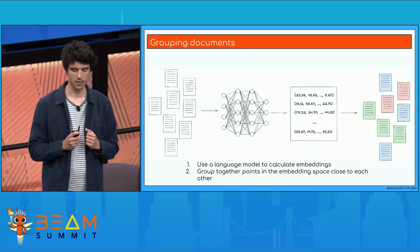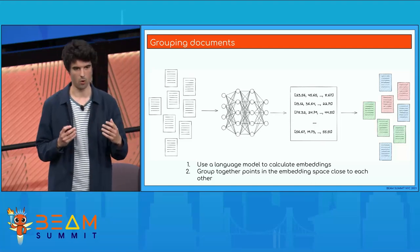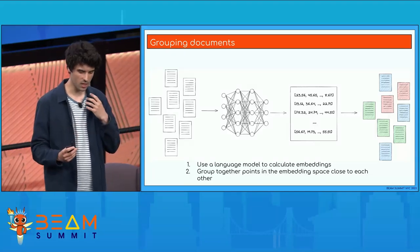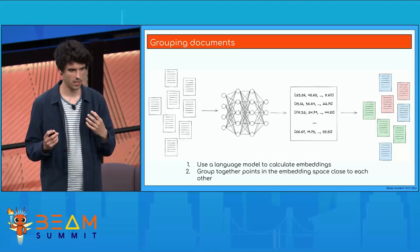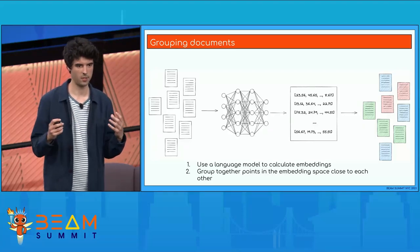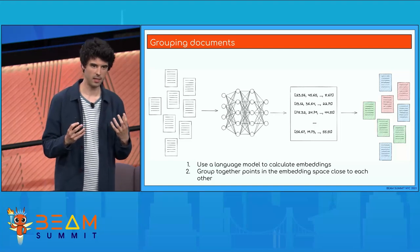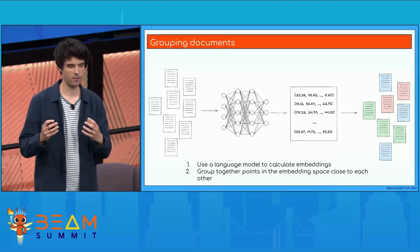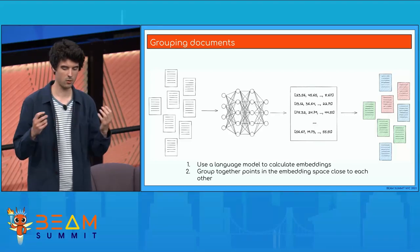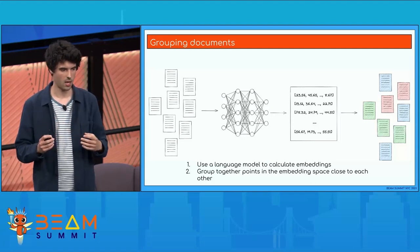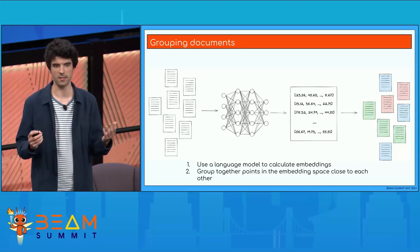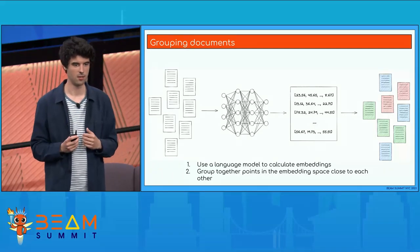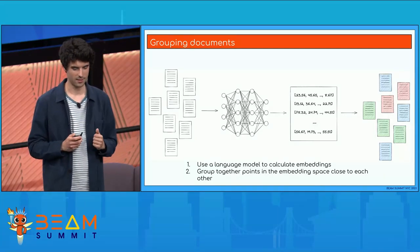Another really interesting application is grouping together documents. What you can basically do is take a whole bunch of text documents, put them through a language model, and that language model outputs something called embeddings. An embedding is basically a mapping of text into an n-dimensional space, so you end up with a whole bunch of points, which you then cluster together. Embeddings are actually the very basis of all those large language models and cool applications you see with things like ChatGPT. So even that is useful here.